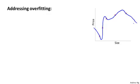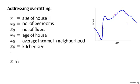So plotting the hypothesis could be one way to try to decide what degree polynomial to use, but that doesn't always work. In fact, more often we may have learning problems where we just have a lot of features, and it's not just a matter of selecting what degree polynomial. When we have so many features, it also becomes much harder to plot the data and becomes much harder to visualize it to decide what features to keep or not. Concretely, if we're trying to predict housing prices, sometimes we can just have a lot of different features, and all of these features seem kind of useful. But if we have a lot of features and very little training data, then overfitting can become a problem.